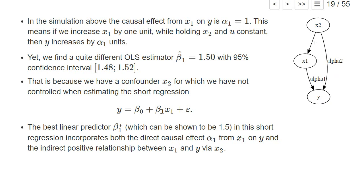If we just run this short regression where we didn't add the confounder, then the confounder is basically part of the error term. Our best linear predictor of the short regression incorporates both the direct causal effect from x1 on y but also the indirect relationship. We know that if we have high values of x1, we probably also have high values of x2 because x2 positively influences x1. Higher values of x2 also lead directly to higher values of y, so we have an indirect positive relationship.